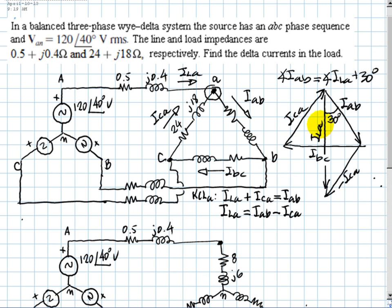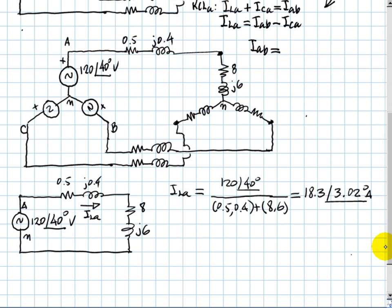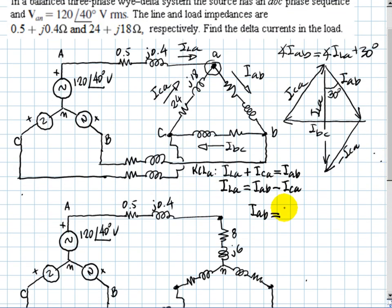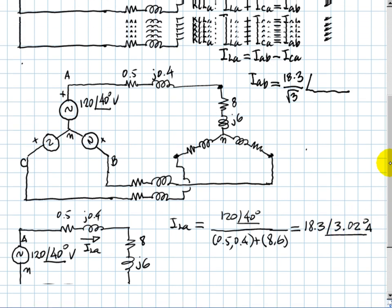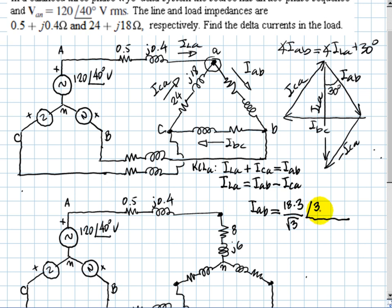And also, IAB is the line current divided by root 3 in size and magnitude. So we can now compute then from the values we have that the current IAB has a magnitude of 18.3 divided by root 3, and the phase - what's going to be the phase? Well, the phase of ILA is 3.02 degrees, so 3.02 degrees plus 30 degrees. And that is that current. Of course, that is 33.02 degrees.